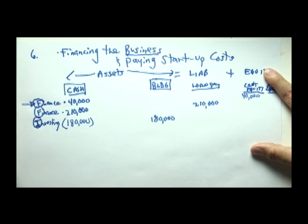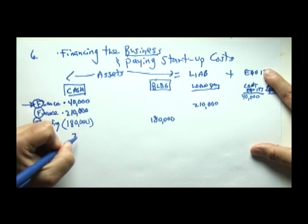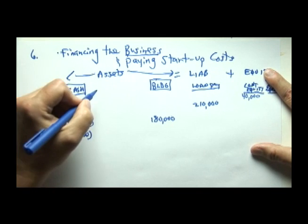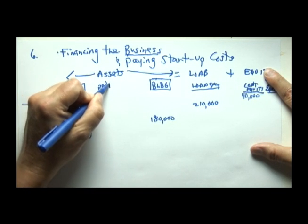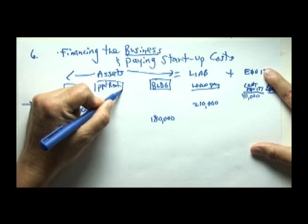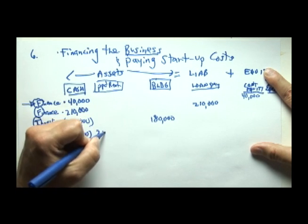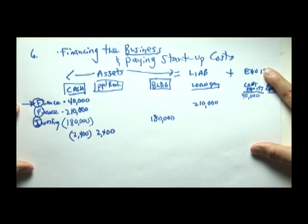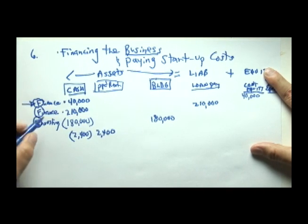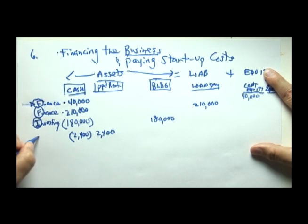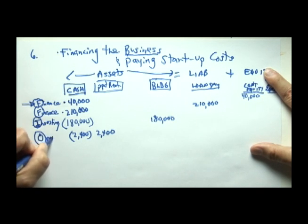Most businesses must also incur short-term startup costs. Let's assume the business pays $2,400 to cover rent for the next year — prepaid rent — at $200 a month times 12 months. If the business paid a full year's rent in advance, cash would go down, prepaid rent would go up, and since rent recurs every year, we label that a short-term O for operating activity.